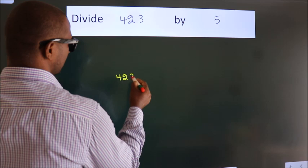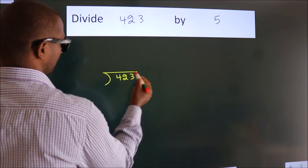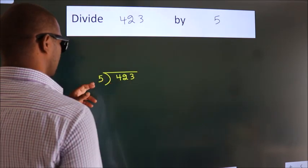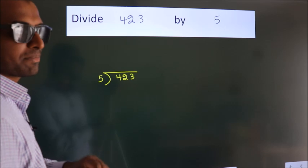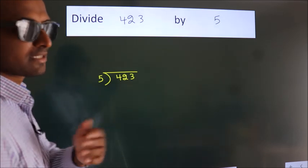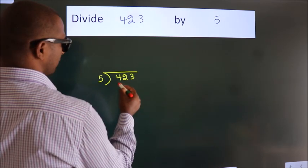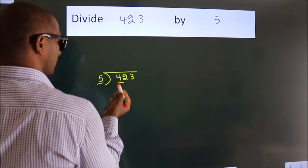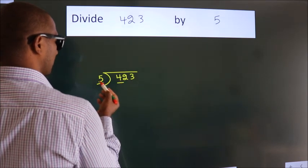423 here, 5 here. This is your step 1. Next, here we have 4, here 5. 4 is smaller than 5.